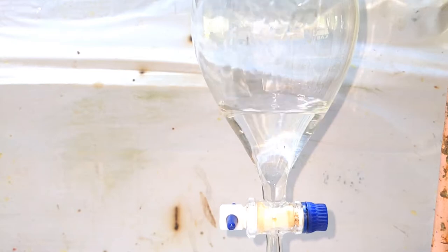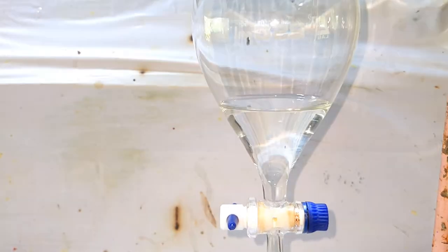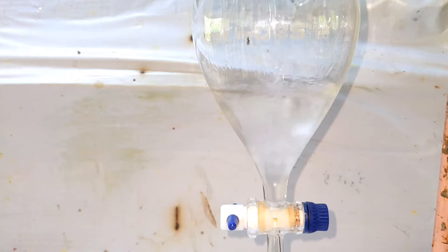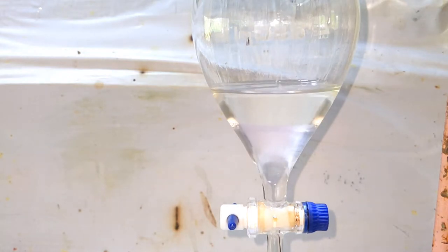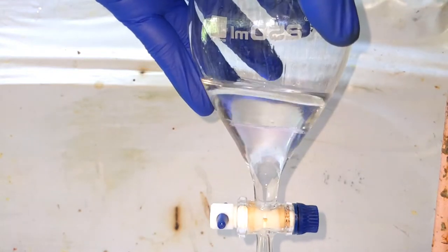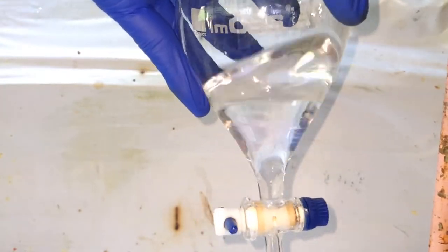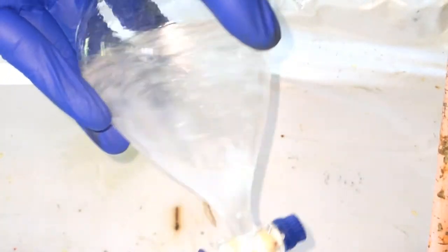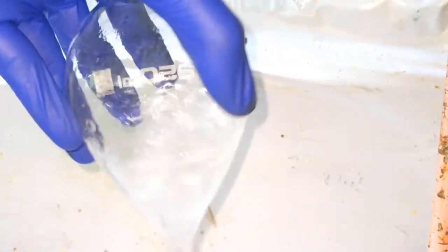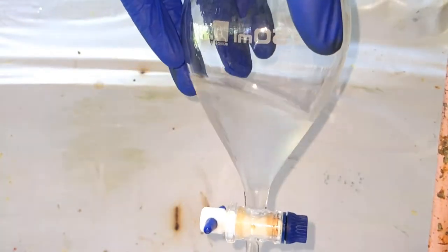Then the organic layer was washed with some 25 to 50 milliliters of distilled water. This would ensure some of the acid and even some impurities, if any present, which have more affinity towards water would be removed with the water layer.